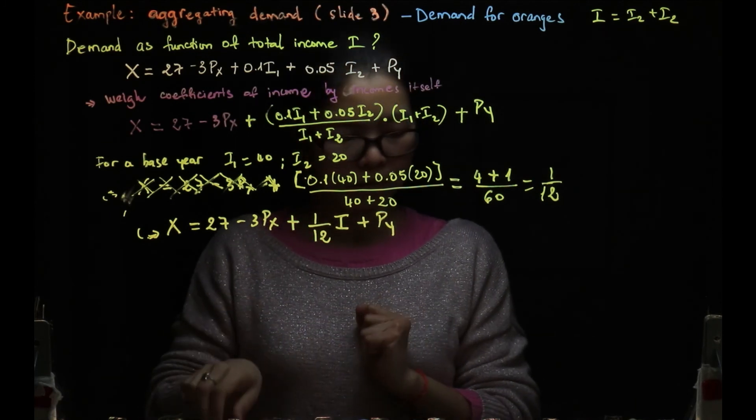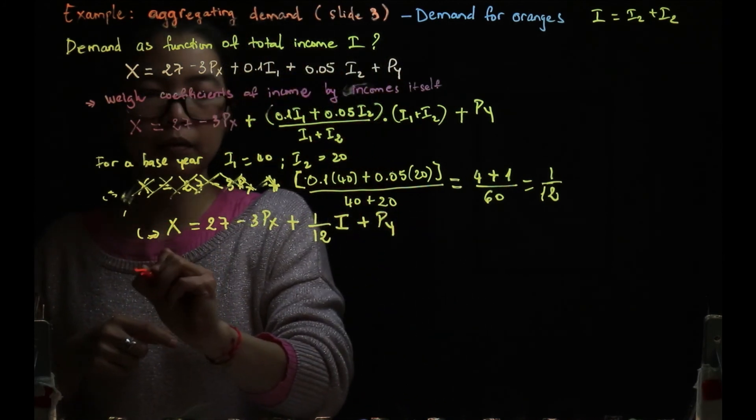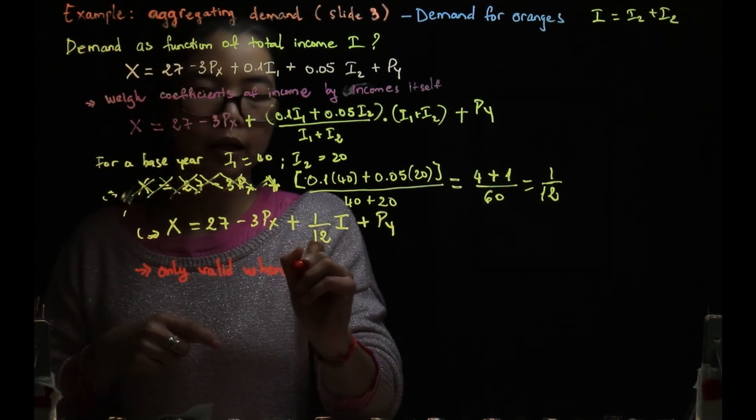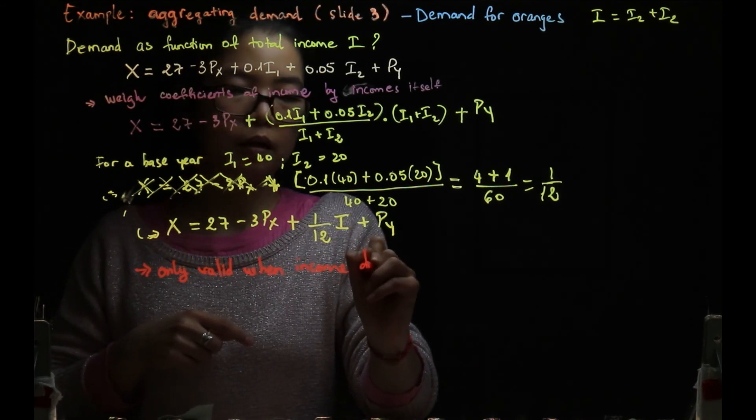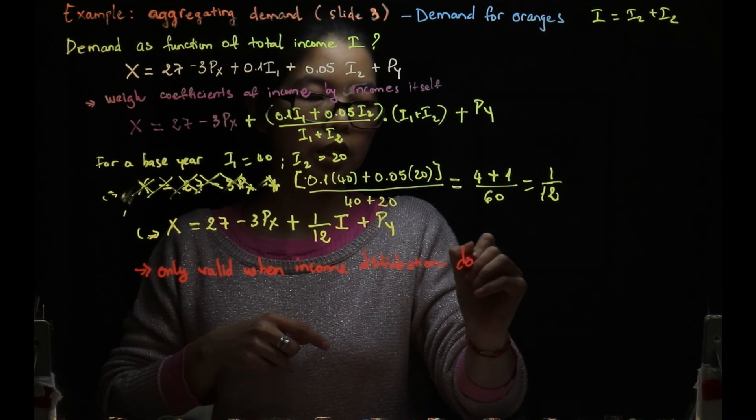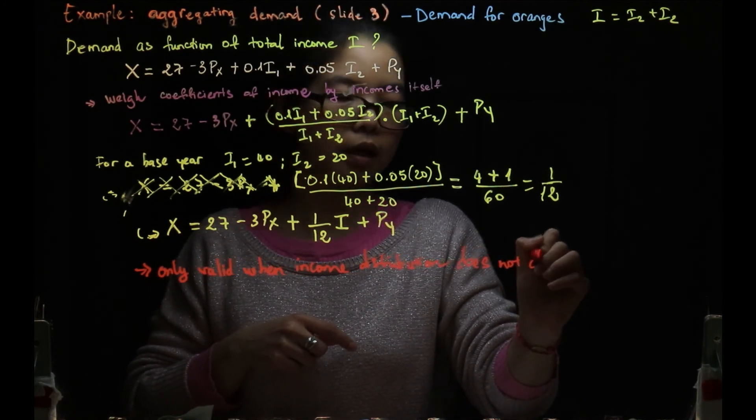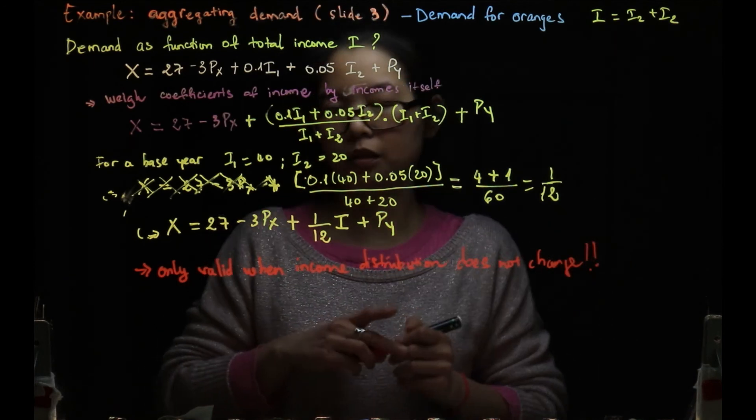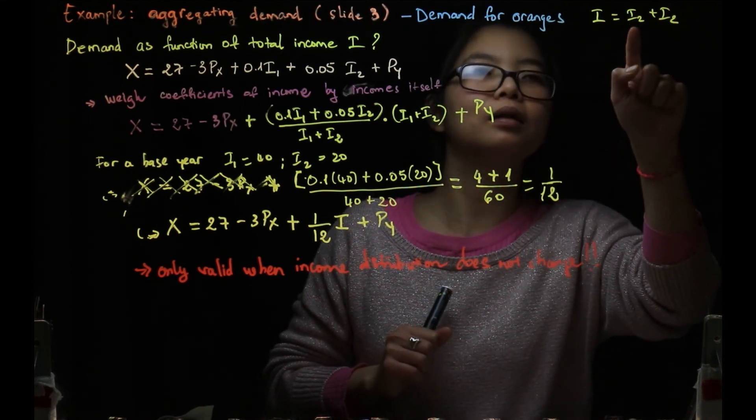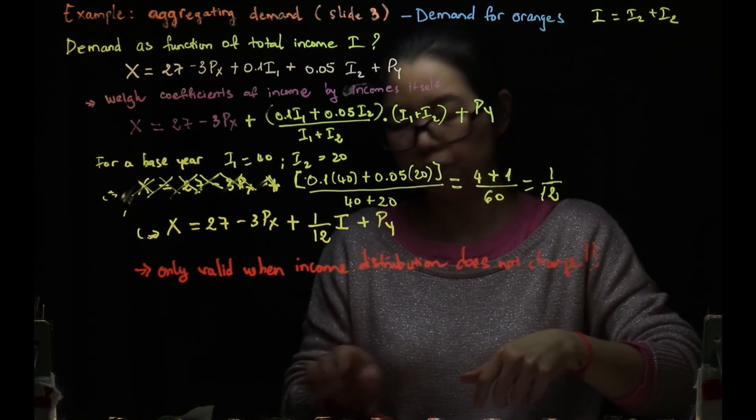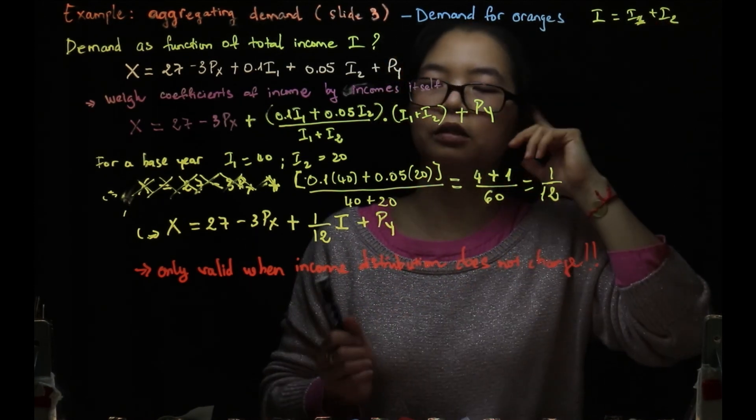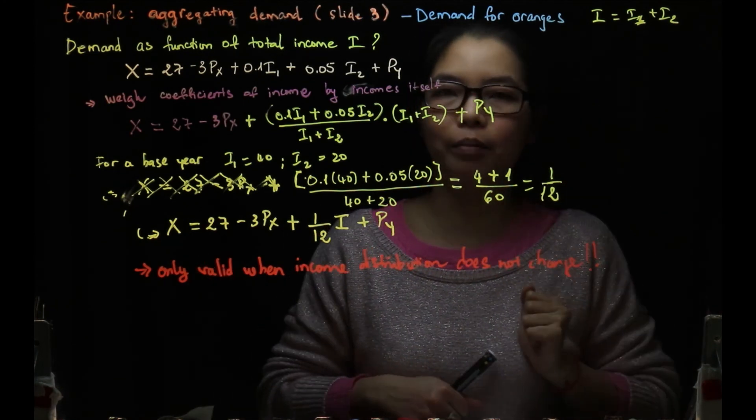However, please, please, please keep that in mind: only valid when income distribution does not change. Because like we showed before, if even if I doesn't change at all, that income transfer among I1 and I2, the demand function, the demand curve will shift. It will not be the same one. So the scope of applications for this total I is limited. And that's also why later when you see the definition of income elasticity of market demand, that also comes with the assumption that income distribution doesn't change.